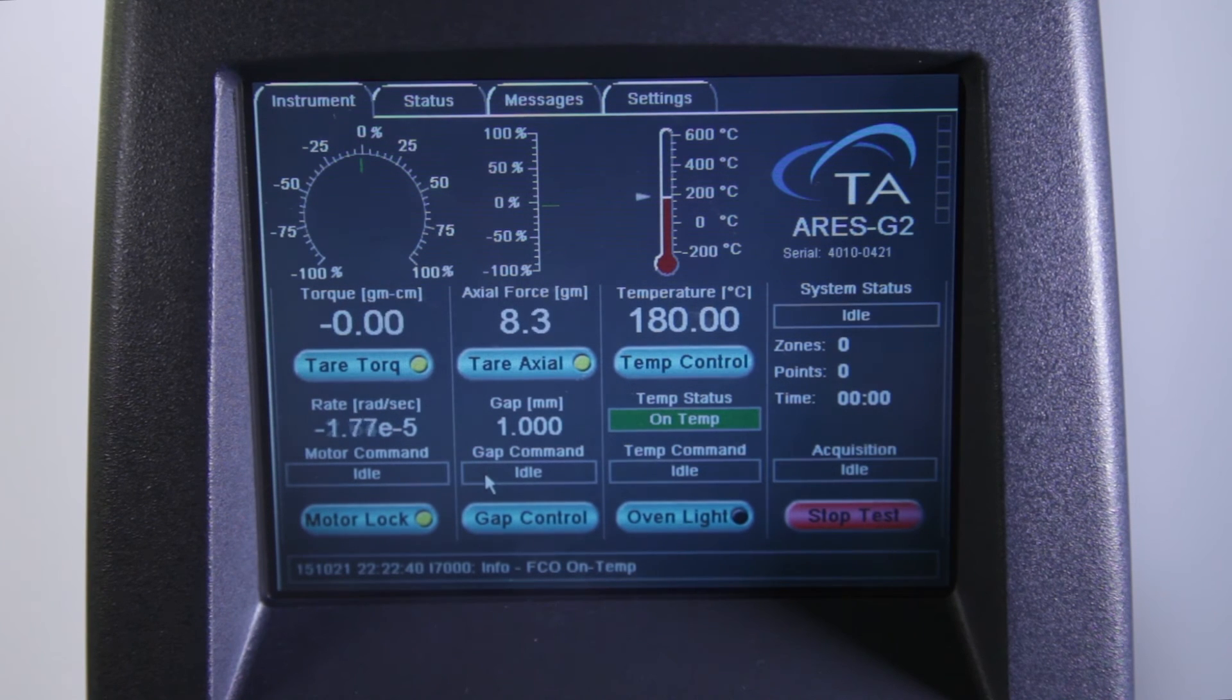At this point, the programmed experiment can be initiated. In this TA Tech Tip, we've demonstrated how to use the melt kit to load polymer pellets on the ARIES G2. Please stay tuned for more helpful TA Tech Tips. Thank you for your interest.